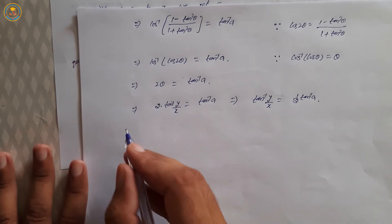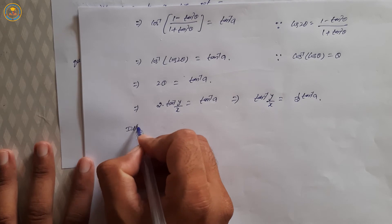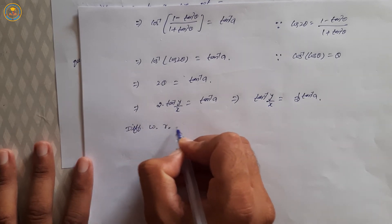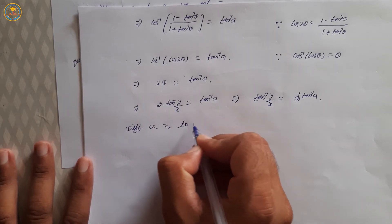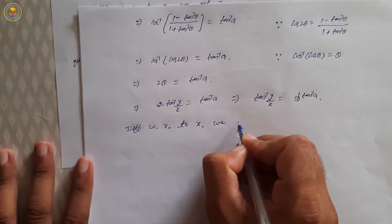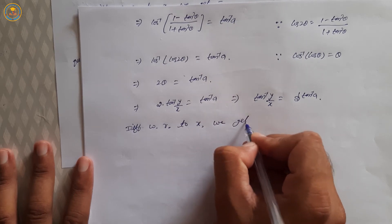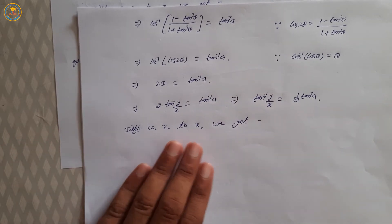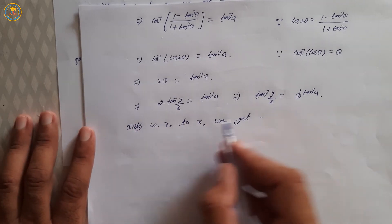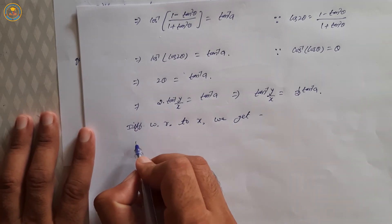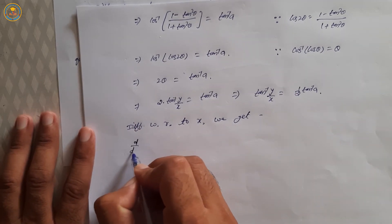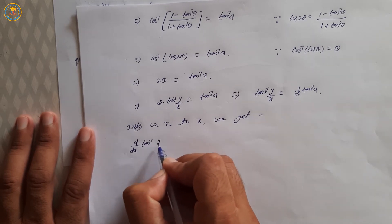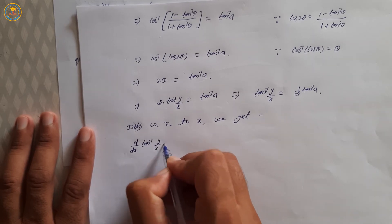Now differentiate with respect to x: derivative of tan inverse (y/x) into derivative of (y/x) is needed. Applying the quotient rule for u upon v.